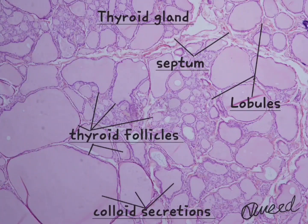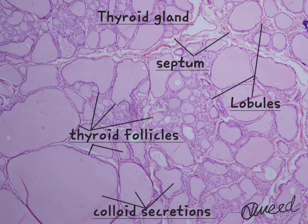This is a slide of the thyroid gland. It is covered by a thin connective tissue capsule. From the capsule, fine septa pass into the gland to divide it into lobules.